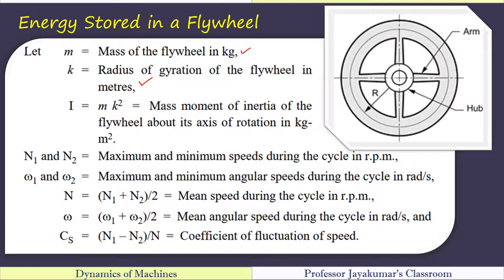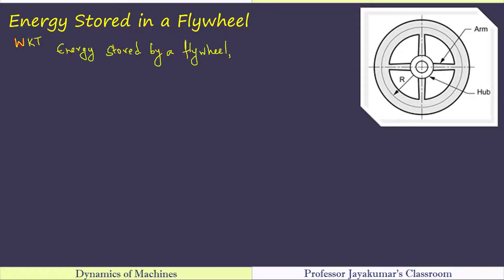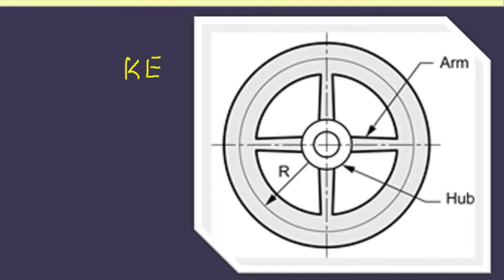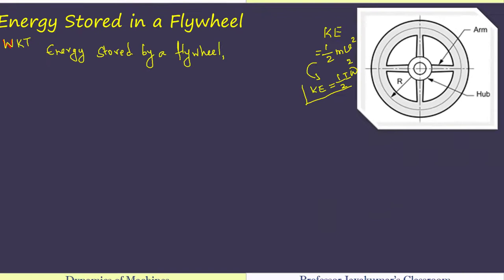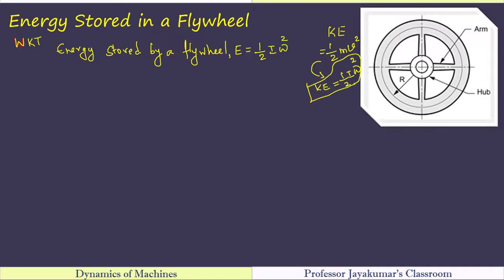This is a typical flywheel. Flywheel construction varies from application to application — it differs for an IC engine versus a punching press — but the concept remains the same. Let m be the mass of the flywheel and k the radius of gyration. The mass moment of inertia I = mk² determines the energy stored by the flywheel. n1 and n2 are maximum and minimum speeds during the cycle in RPM; ω1 and ω2 are maximum and minimum angular velocities. Flywheel stores energy in the form of kinetic energy. For rotational motion, kinetic energy equals ½Iω², where I is mass moment of inertia and ω is angular velocity.